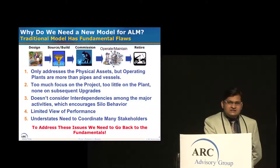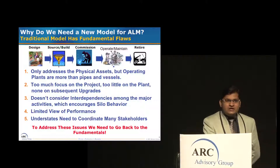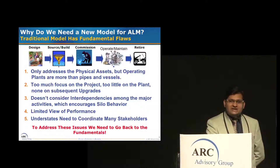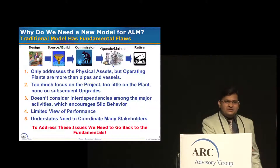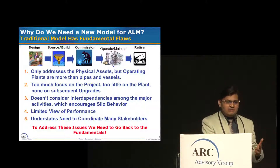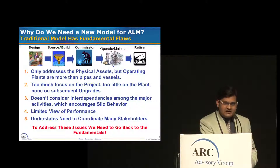Basically, our traditional model focuses too much on physical assets. But in reality, we also have virtual assets and human assets that have become equally important. This traditional model focuses too much on projects, EPCs, creating new assets, and then on plant and operational issues. It also doesn't consider the interdependencies among these operations. Presently and traditionally, all organizations are structured with separate functional groups for design, sourcing, building, commissioning, operations, maintenance, and portfolio management — and all these have a lot of information that needs to be shared. But the consideration for interdependencies is not done.